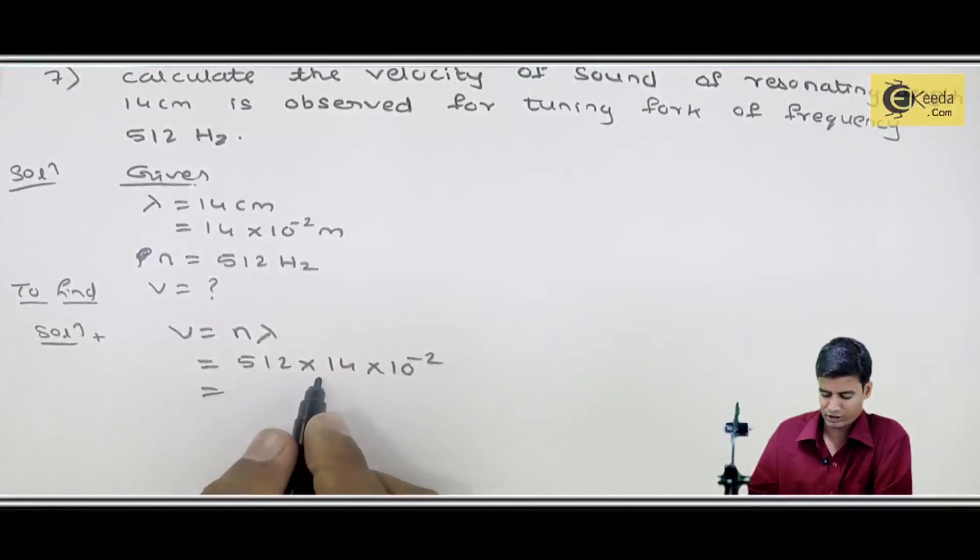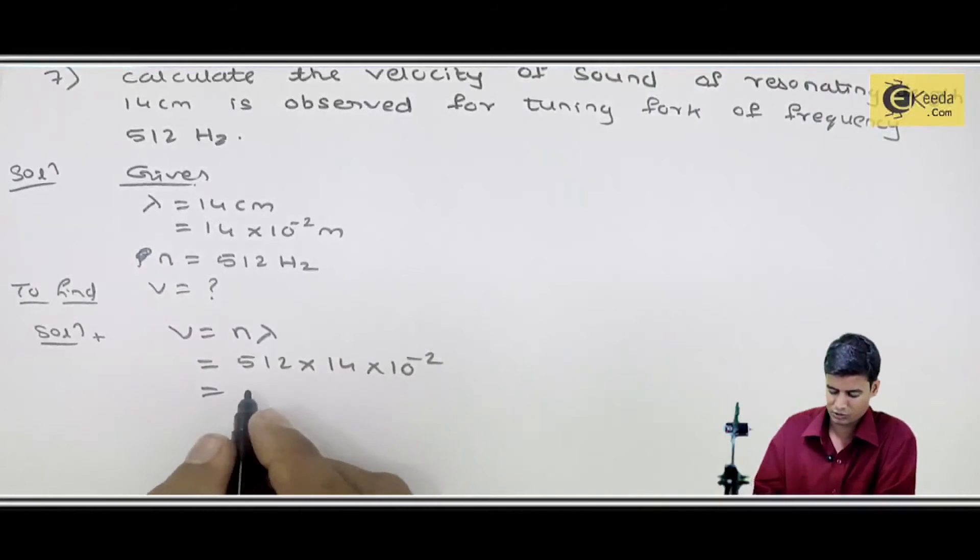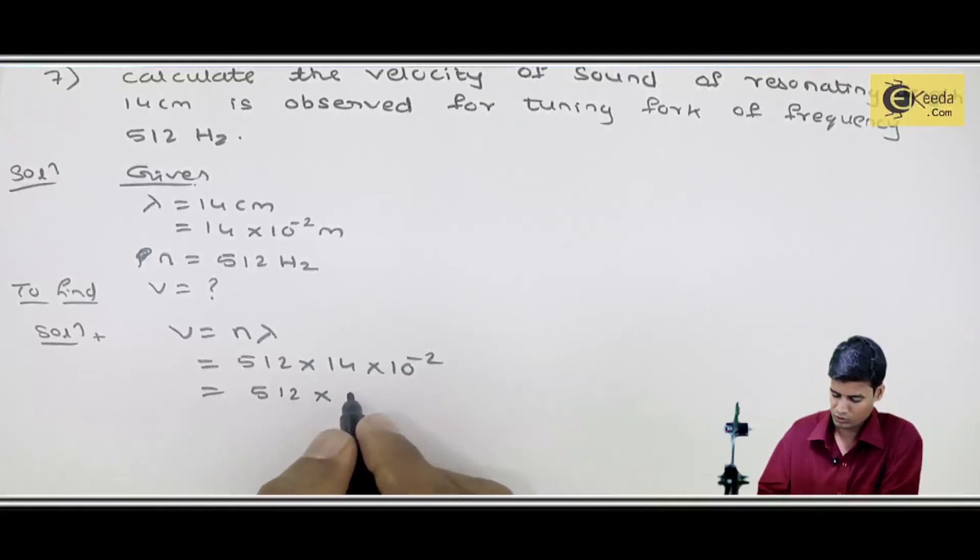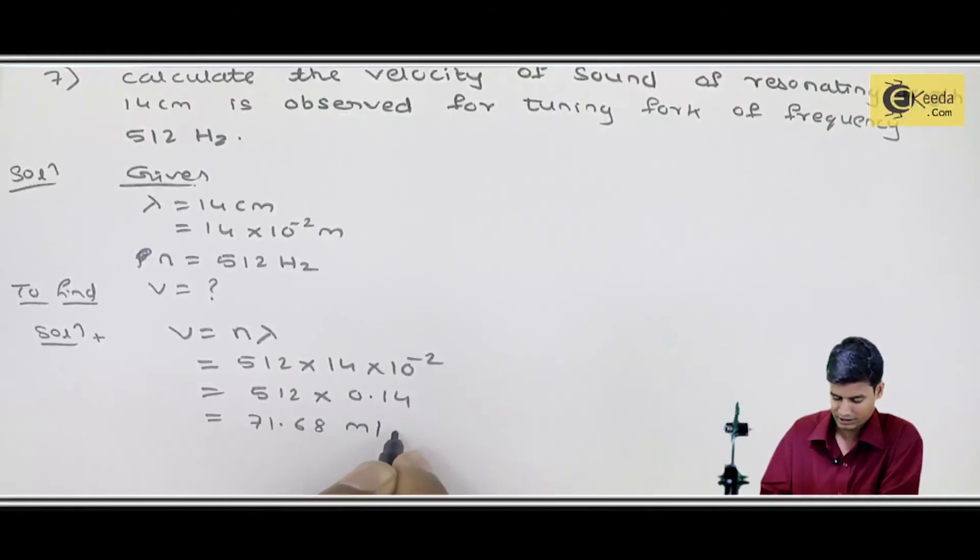n equals 512 into 14 into 10 to the power minus 2, so 512 into 0.14, which equals 71.68 meter per second.